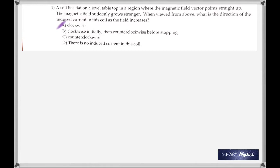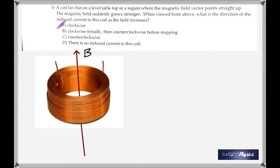As the field increases, the induced current would always be in such a direction as to oppose what produces it. In this case, it is the increasing magnetic field that is producing it. Therefore, the magnetic field produced by the induced current would be against this magnetic field — the field already there, pointing straight up — so the induced current must produce a field that is opposite to that.